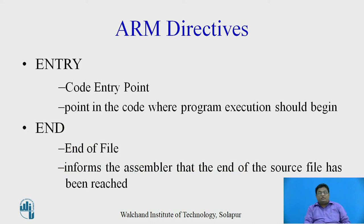The next ARM directive is ENTRY, which specifies the code entry point. The ENTRY directive points to the location in code where program execution should begin — the assembler starts executing instructions written after the ENTRY directive. Next is END. The END directive tells the end of file; it informs the assembler that the end of the source file has been reached and stops execution.